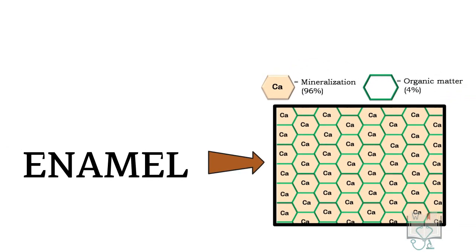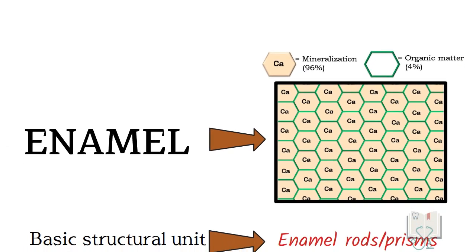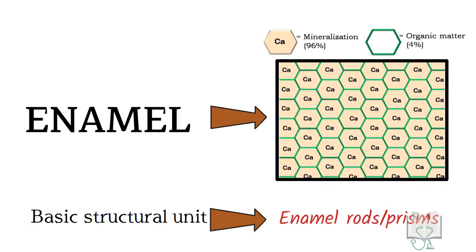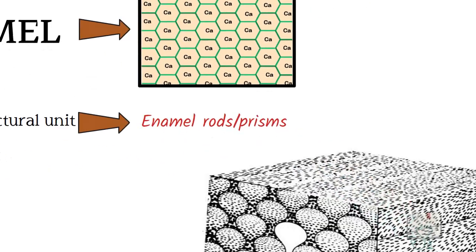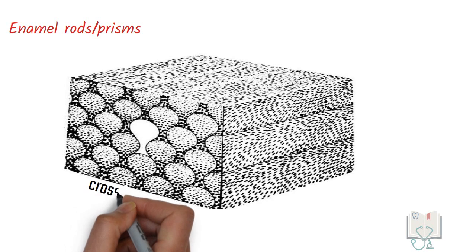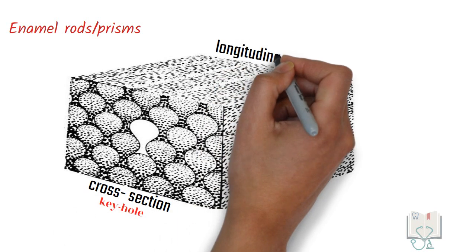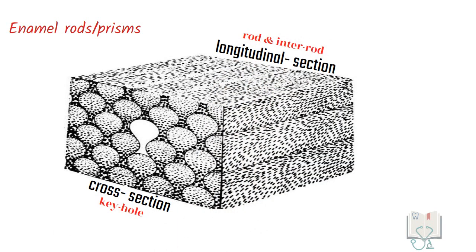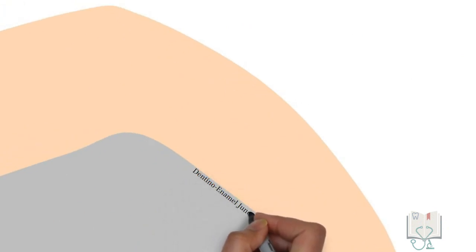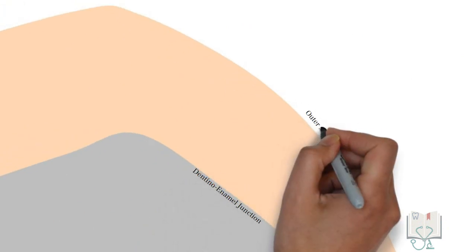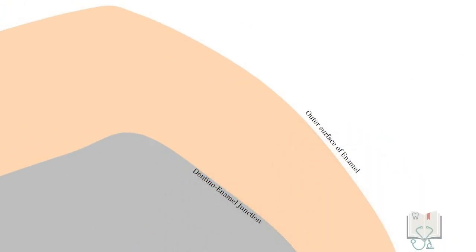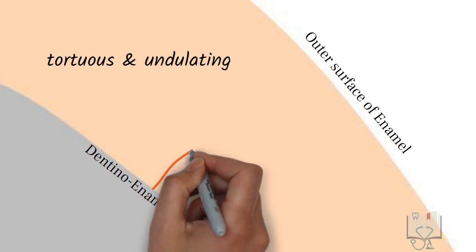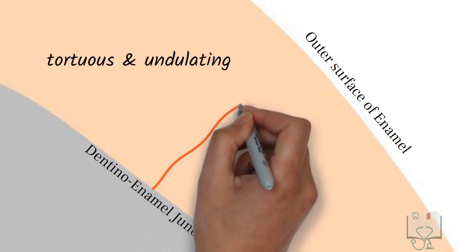Enamel is 96% mineralized and its basic structural unit is the enamel rod. Enamel rods in cross-section have a keyhole pattern and in longitudinal section have a rod and inter-rod pattern. Individual rods run from the dentino-enamel junction to the enamel surface, but the path is not straight — it is tortuous and undulating.